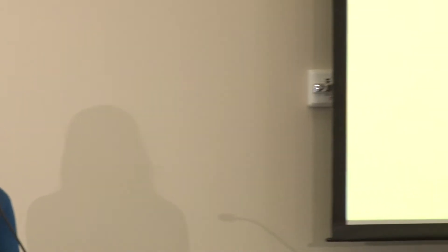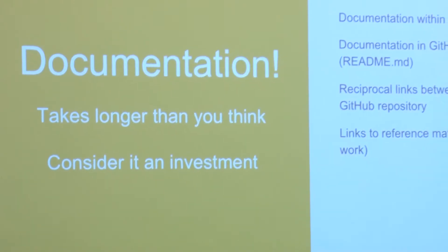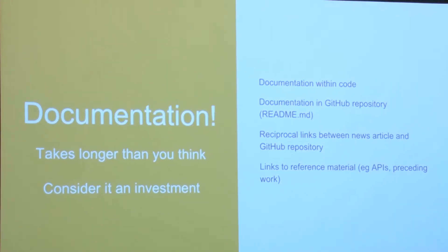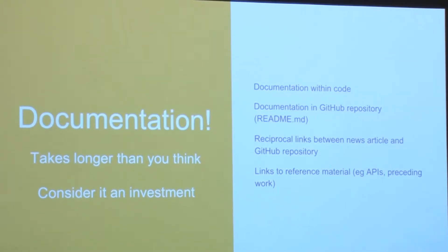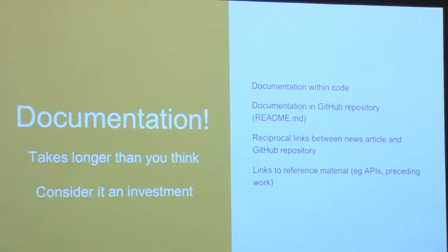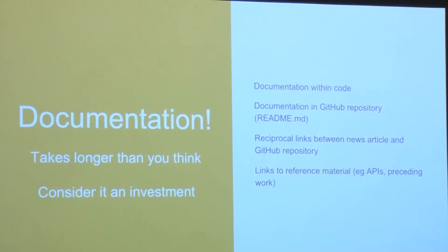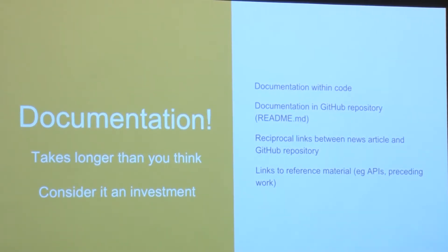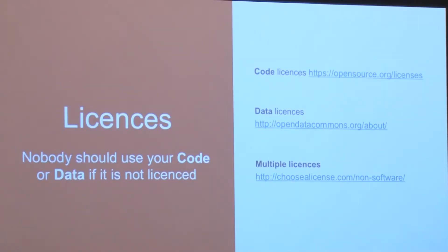Documentation does take a lot of time, but I would urge you to think of it as an investment. It would take longer to begin with, but once it becomes more part of your process and workflow, it will be easier and quicker to do. In the GitHub repository, including links between your article and the repository helps people cross-reference. Licenses is also something that needs to be considered — nobody should really be using your code or data if you don't have a license attached to it. These are links for different code licenses if you're sharing code, data licenses if you're sharing data, and advice if your project involves both code and data — you can have the two parts separately licensed.